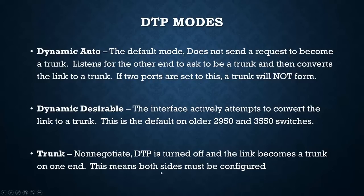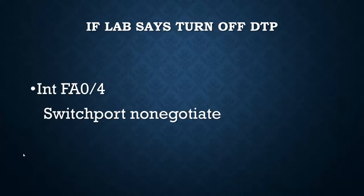With trunk non-negotiate, DTP is turned off and both sides have to be manually configured. If you do non-negotiate, it won't send anything to the other switch to say 'become a trunk' - you have to set both sides. If you set both sides manually to trunk non-negotiate, they won't negotiate, there's no extra traffic, and they'll both become trunks. To turn off DTP: 'interface fa0/4', enter, 'switchport nonegotiate', enter. Then 'switchport mode trunk' and you're all set.